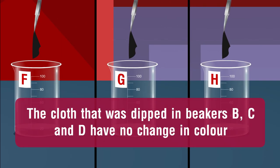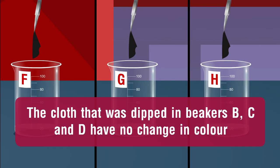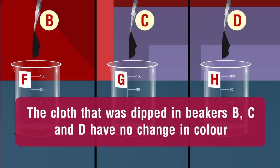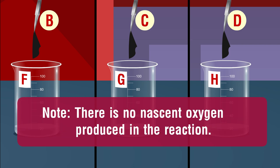The cloth that was dipped in beakers B, C, and D shows no change in color, confirming that only compound A is bleaching powder.